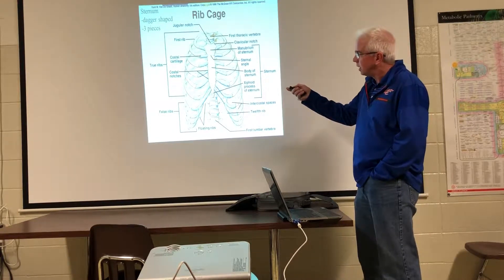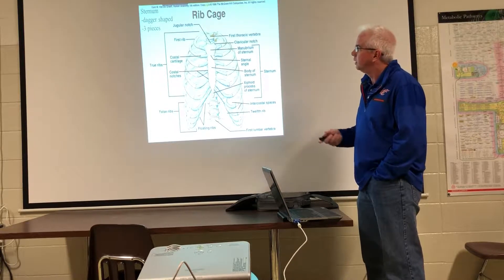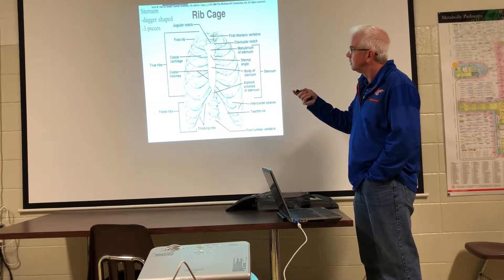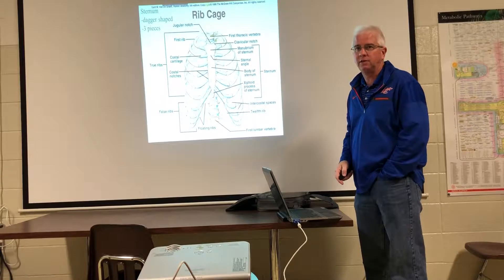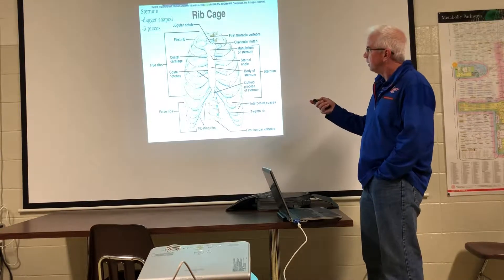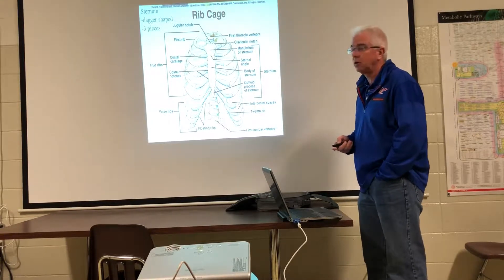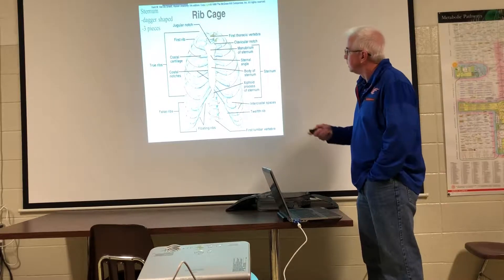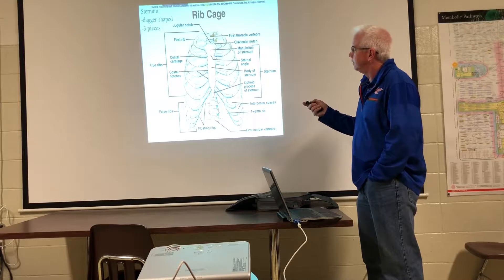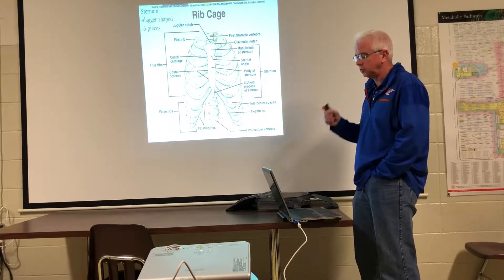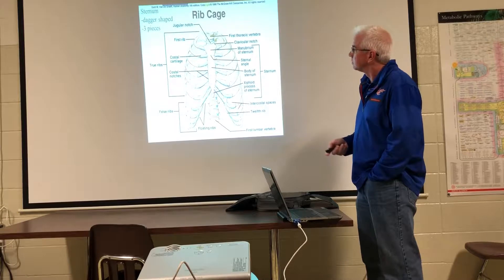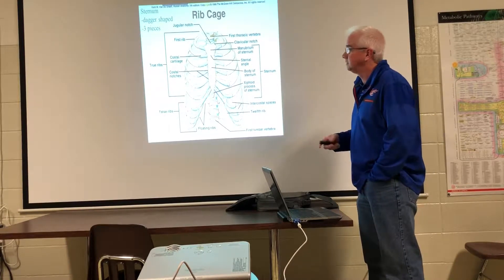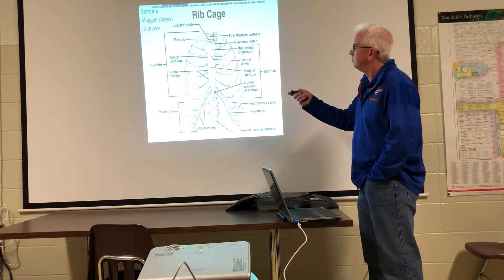The manubrium of the sternum has a jugular notch here, where a piece of the anterior jugular vein passes. This piece right here is called the clavicular notch because that is the articulation for the clavicle. This is a famous joint in human anatomy called the AC joint. The clavicle articulates with the manubrium — this is the SC joint, the sternoclavicular joint, where the sternum and the clavicle are articulated. It allows for some movement and has a typical synovial joint.